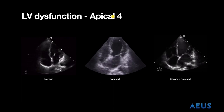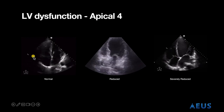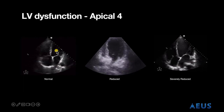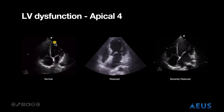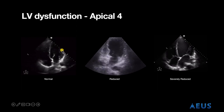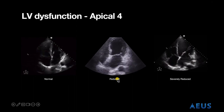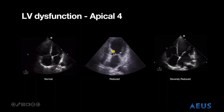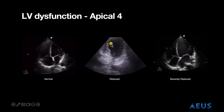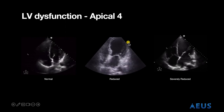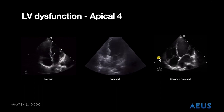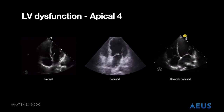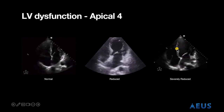Now we can take a look at left ventricular dysfunction. On the left here we have a normal heart. Pay attention to the mitral valve and the walls of the left ventricle — in this image you can see it is coming together and squeezing well. Here's an example of a reduced ejection fraction — one of the things that stands out is that this region of the left ventricular walls does not appear to be coming together as well as this region. And lastly, this is a severely reduced ejection fraction where you can see minimal movement of the left ventricle indicating that the squeeze is not good.